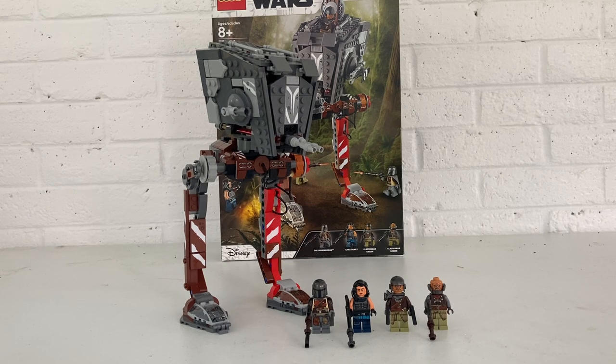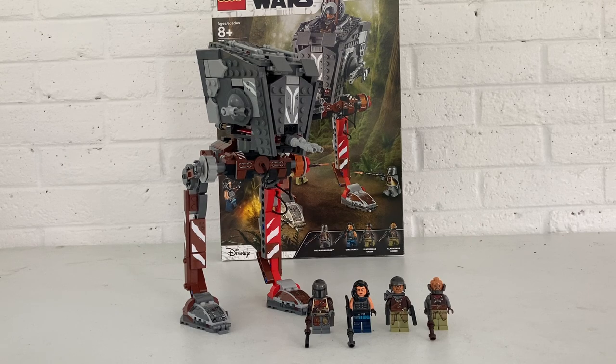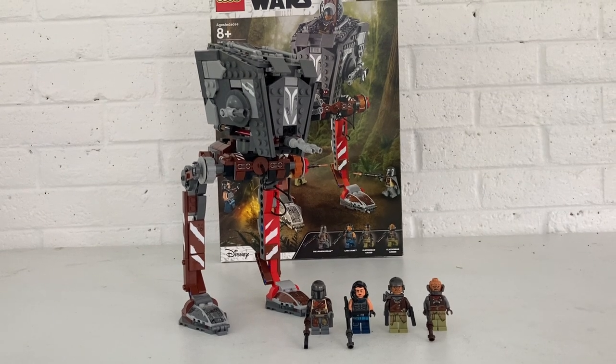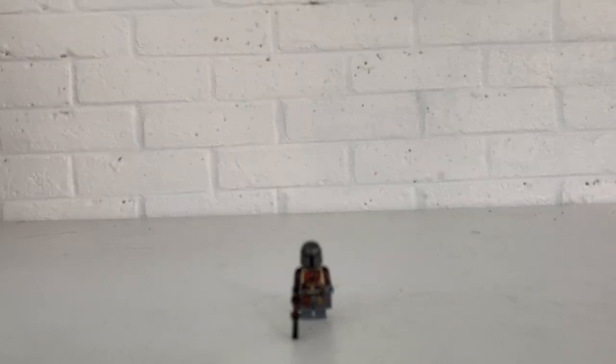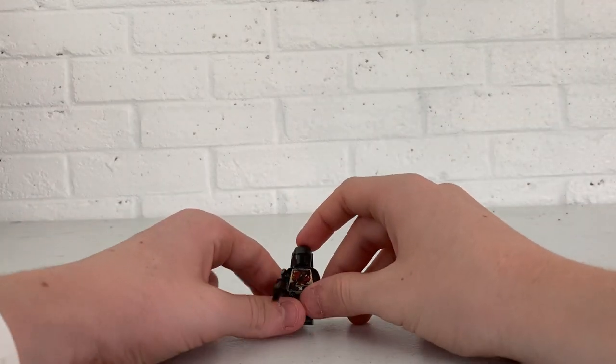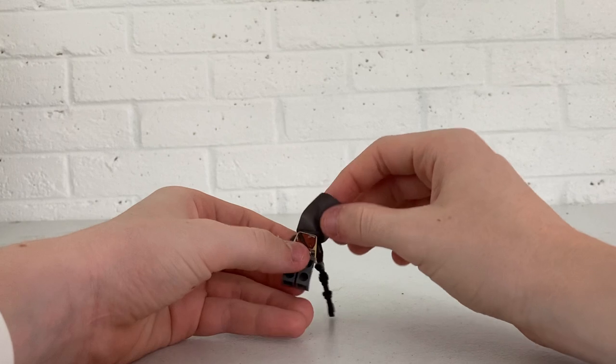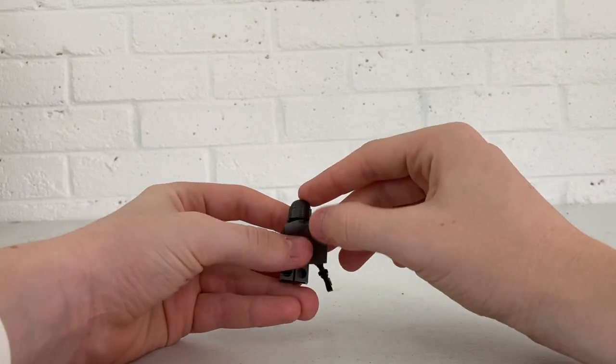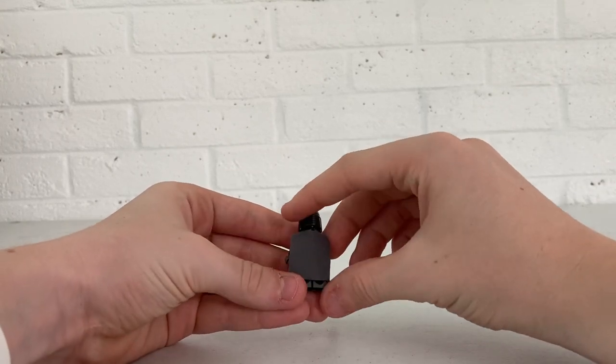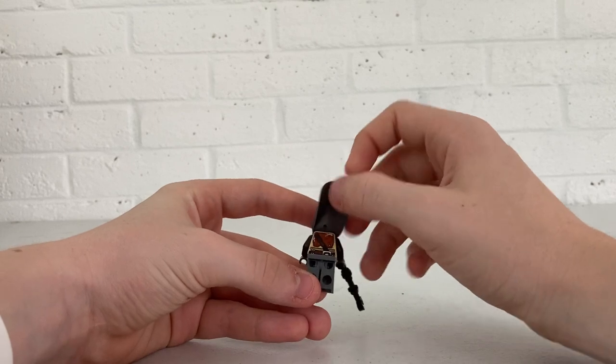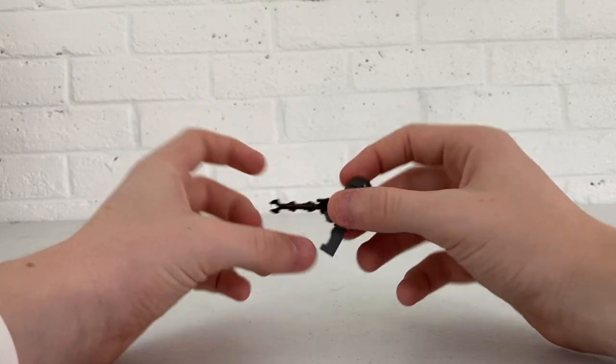Let's start the review. Our first minifigure up is Mando. To start out with, he has all this not-Beskar stuff on. He has the cloth cape in the back here and he has his armor.